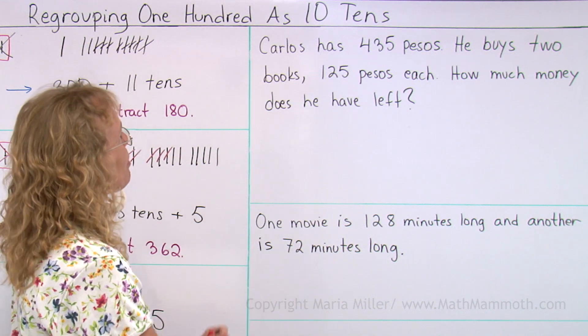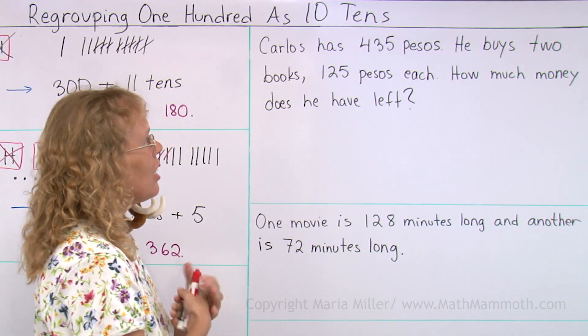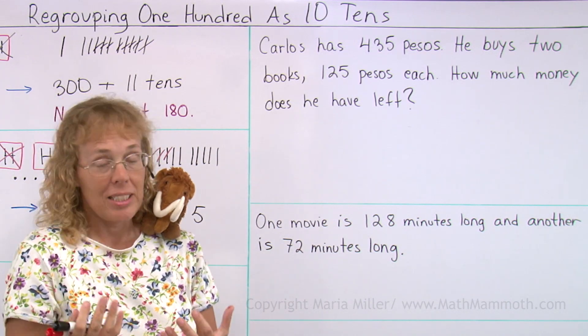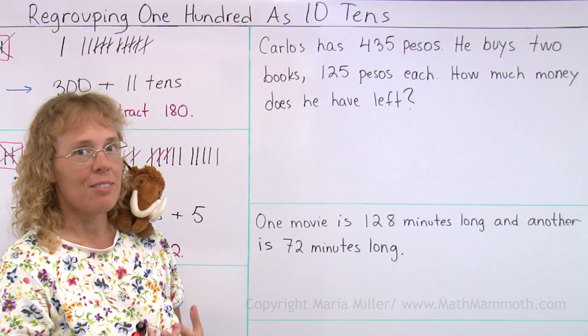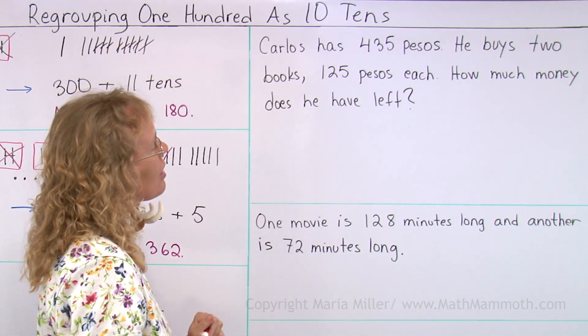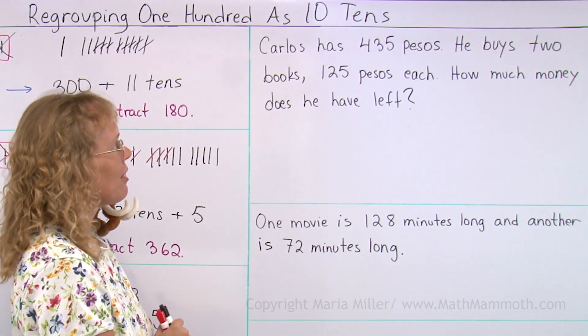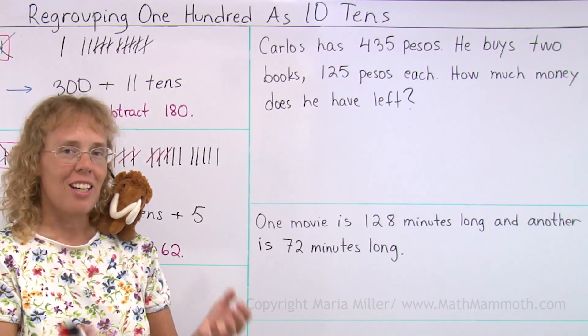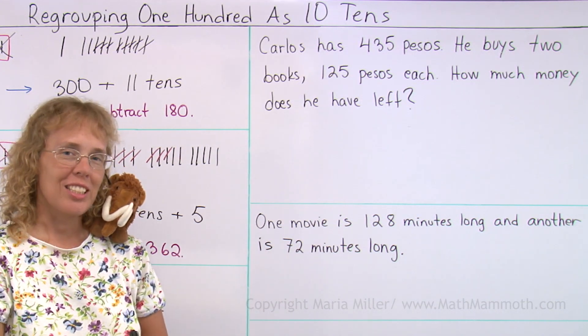And we get to solve some word problems. Carlos has 435 pesos - now this is for example in a country like Mexico, there's many countries that use pesos as their money. He buys two books, 125 pesos each. How much money does he have left?